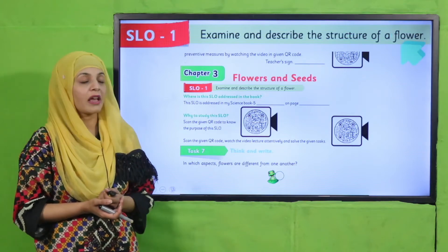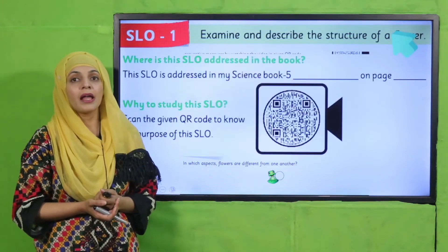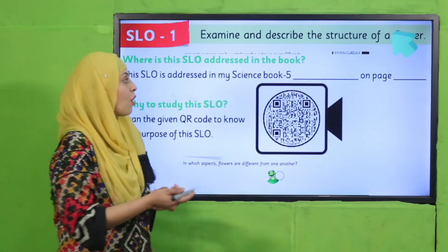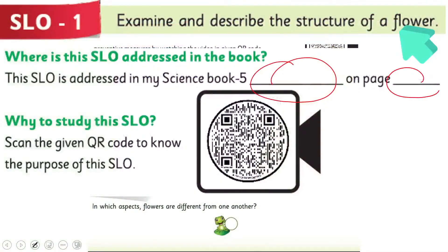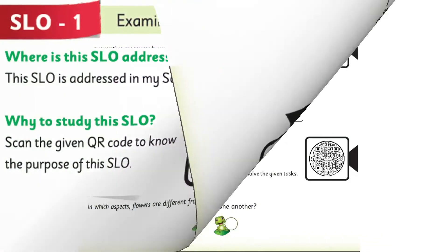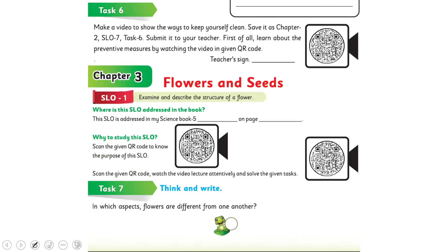Now carefully read out the SLO and then find it in your Science 5 book. Write down the name of the book and the page number in the blanks provided.